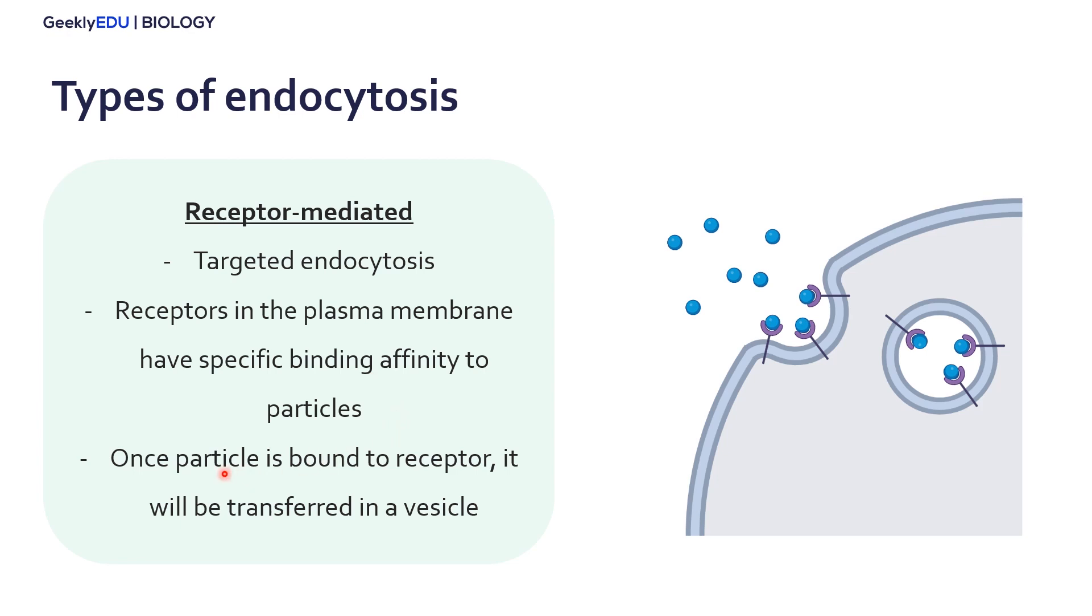Once the particle is bound, this signals the plasma membrane to close in on itself and create a vesicle. Here we see the receptors which are specific to bind to these blue particles. Once they're bound, they will go into a vesicle which will move within the cell.